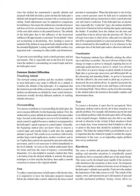Common Student Difficulties - Visualizing Attitude. The forward seating position and the excellent visibility in most helicopters may make it difficult for a student to visualize the attitude of the helicopter. It is important that the instructor provide all the assistance possible to ensure the student can determine an attitude by some visual reference. Instructors usually develop different methods of teaching attitude references. Over-controlling: two factors contribute to this most common difficulty. First, the student fails to notice attitude deviation until it becomes rather large. Second, too much control is applied because a student is not prepared for the helicopter's quick response.